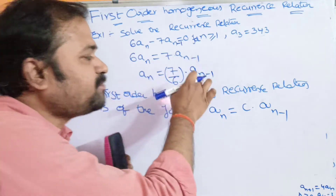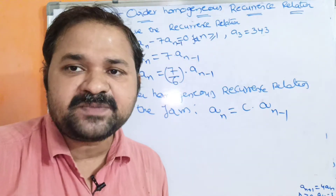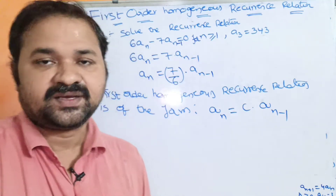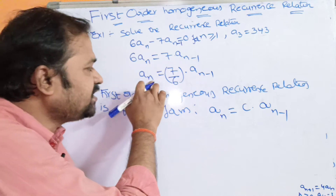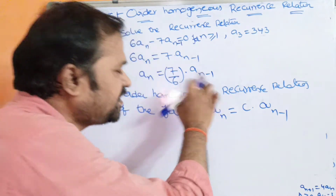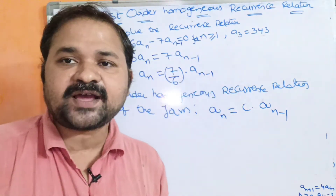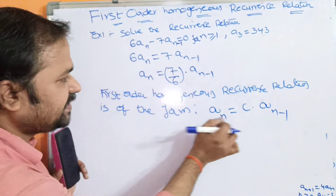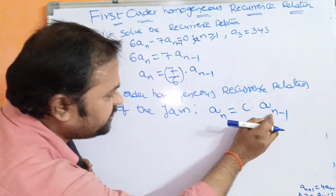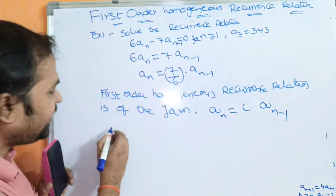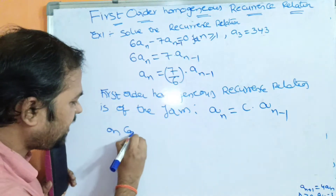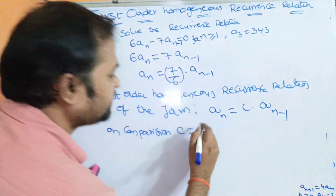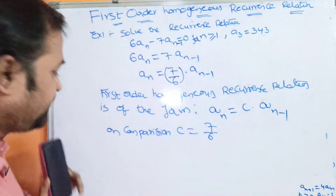Here we have only one term. On comparison, comparing AN = C·AN−1 with AN = (7/6)·AN−1, we get C = 7/6.